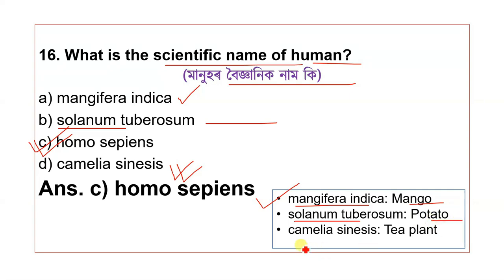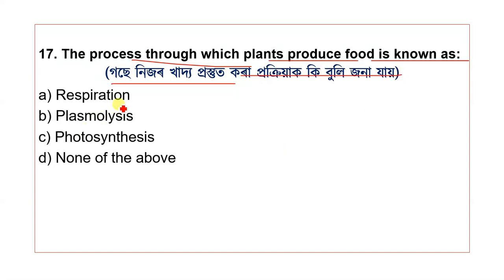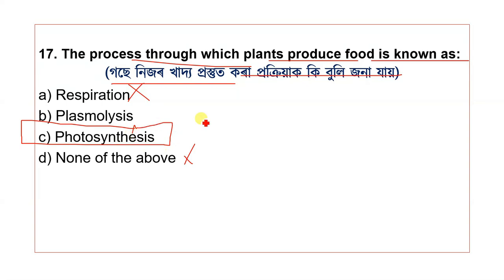Question 17: The process through which plants produce food is known as — options include respiration, plasmolysis, photosynthesis, and none of the above. The correct answer is photosynthesis.